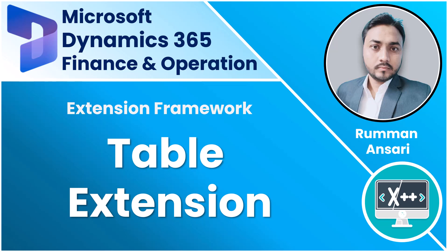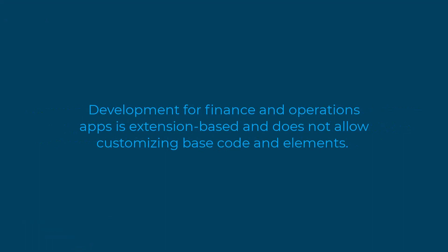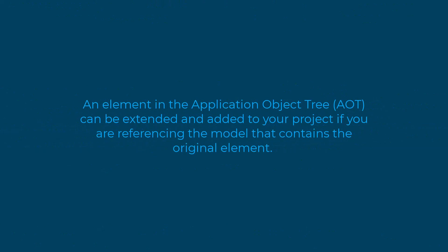If you are watching this particular video directly, let me explain a few things. Development for Financial Operations apps is extension-based and does not allow customizing base code and elements. This method allows developers to modify application behavior and elements in a less intrusive manner, enabling organizations to continuously update the application with lower cost and minimum code errors. An element in the Application Object Tree can be extended and added to your project if you are referencing the model that contains the original element. You can right-click on the element in the AOT and select 'Create Extension' for any particular element, for example a table or form.